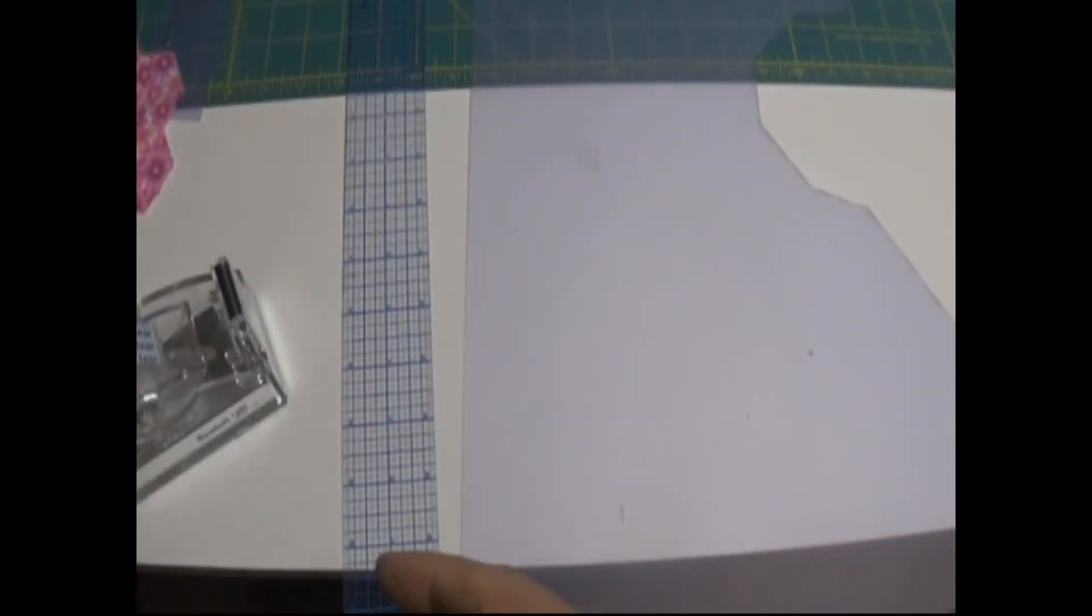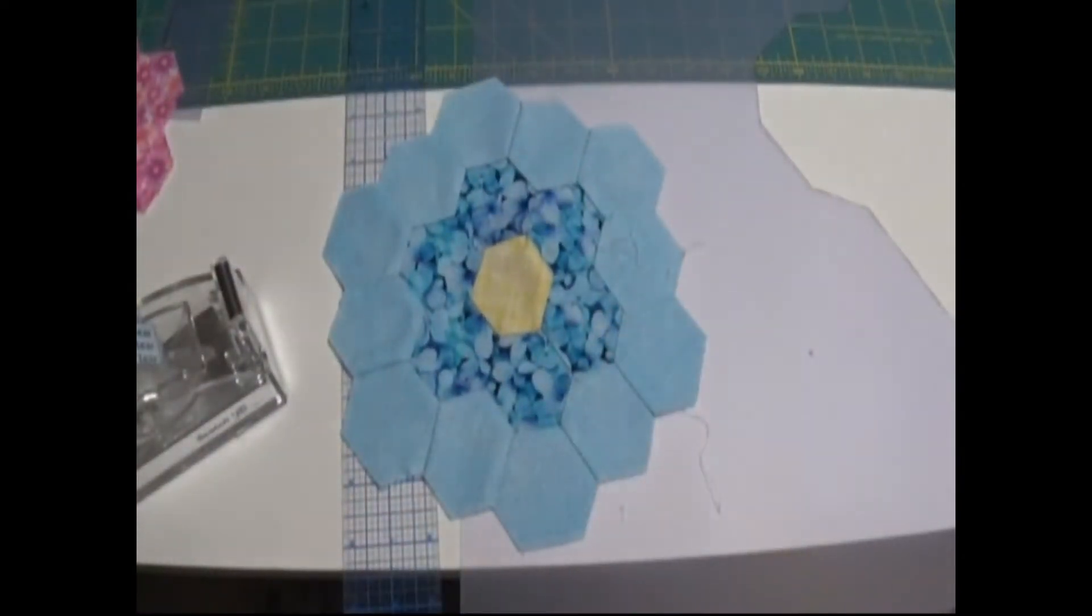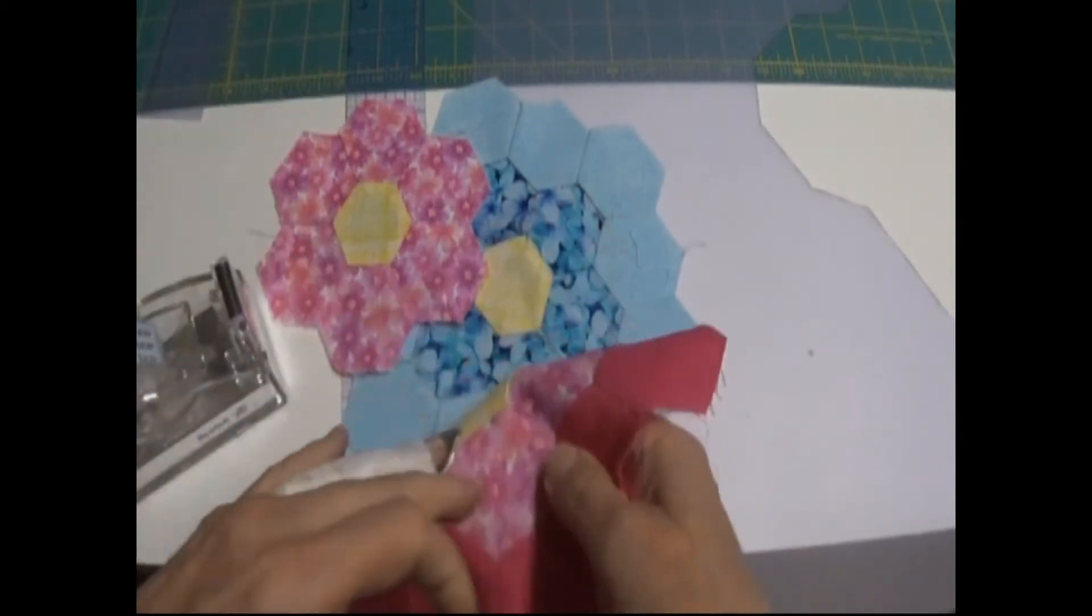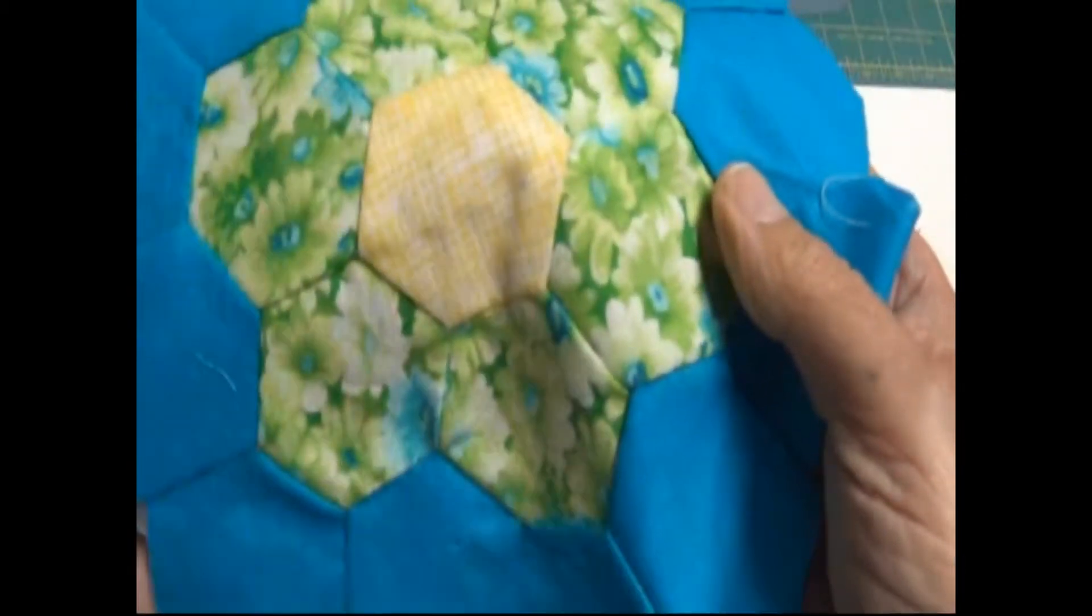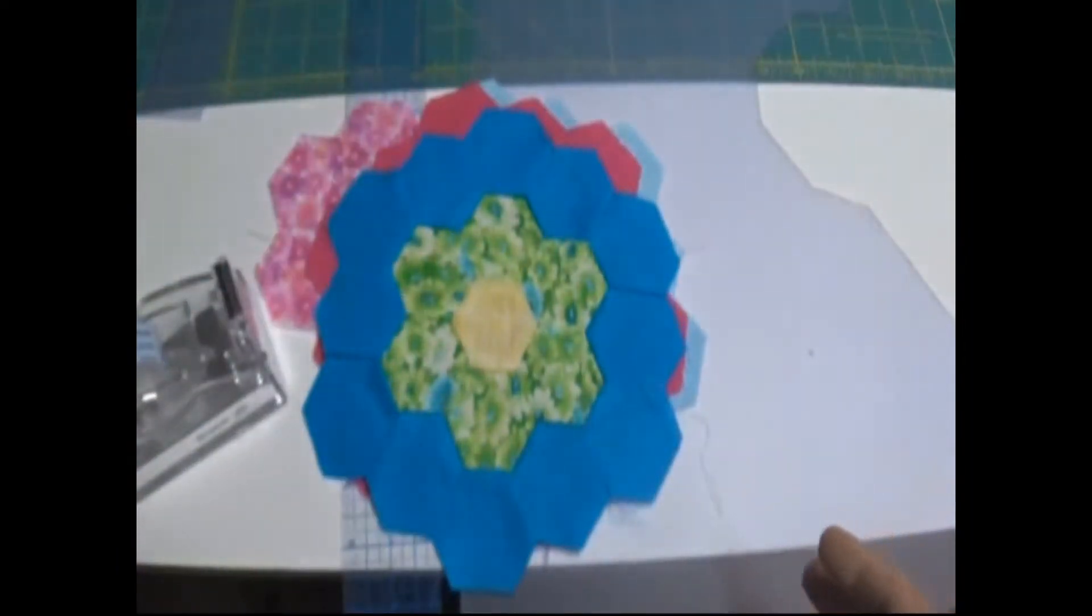We're working with Grandmother's Garden Quilt Blocks, the kind that are made with hexagons. What we're going to talk about is how to mark the hexagons so that you can sew them together, so that the corners touch and meet perfectly and are sewn. Now these Grandmother's Garden hexagons are hand sewn.